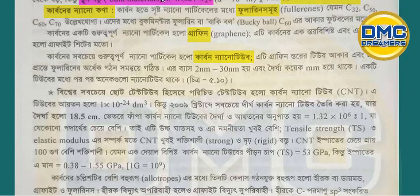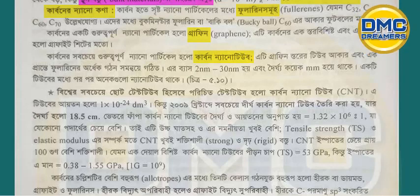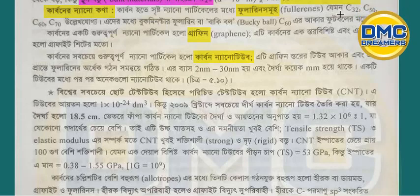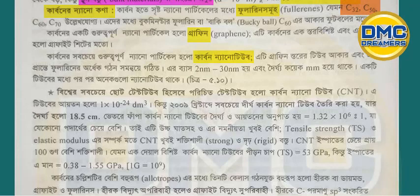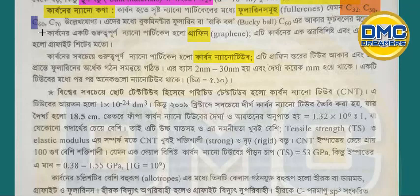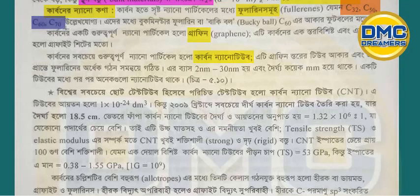First of all, the carbon particle is called fullerene. Fullerene varieties include C-32, C-50, C-60, and C-70. Carbon in this context is one of the two-dimensional particles.